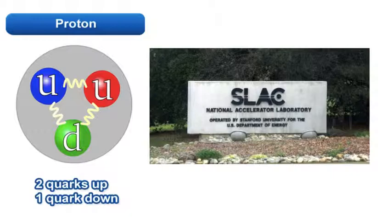In 1968, experiments in the Stanford Linear Accelerator Center discovered that protons and neutrons are made up of smaller particles called quarks.